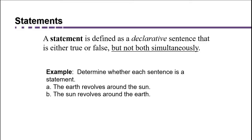Part B: The sun revolves around the earth. Even though that's false, it's okay — it's still considered a statement. Remember, statements can be true or false as long as they're not both simultaneously, and it is a declarative sentence, so that's a statement.